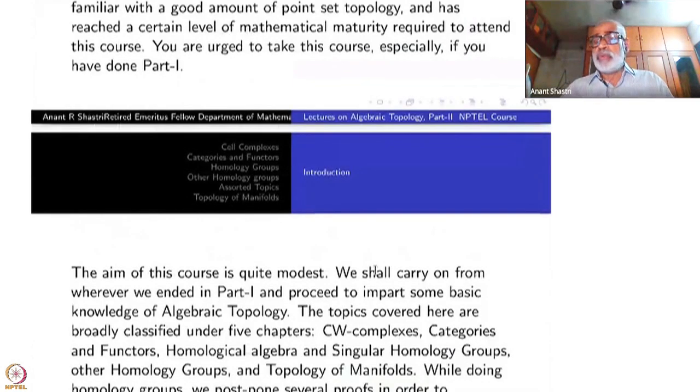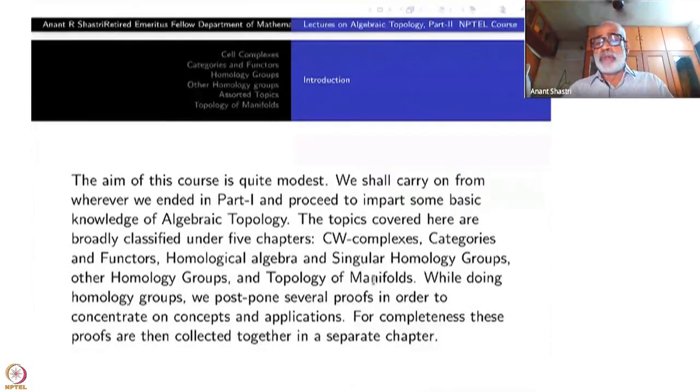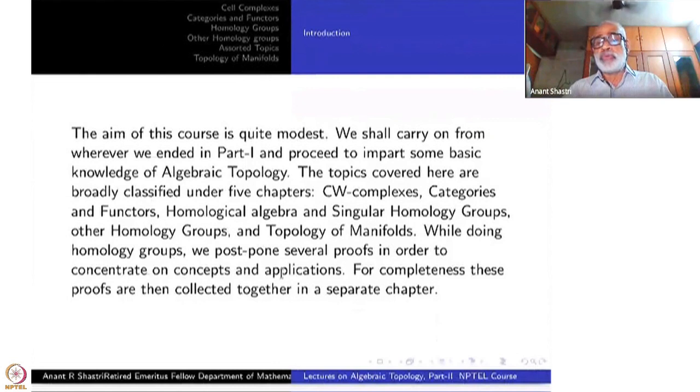The aim of this course is quite modest. We shall carry on from wherever we ended in Part 1 and proceed to impart some basic knowledge of algebraic topology. The topics covered here are broadly classified under five main chapters: CW complexes, categories and functors, homological algebra, singular homology groups, and other homology groups. While doing homology groups, we postpone a lot of proofs in order to concentrate on concepts and applications.